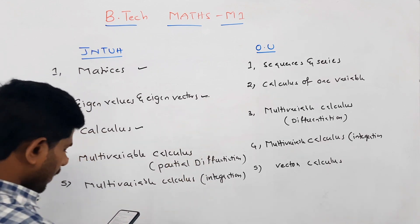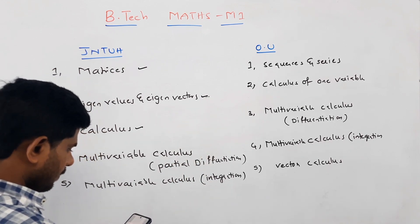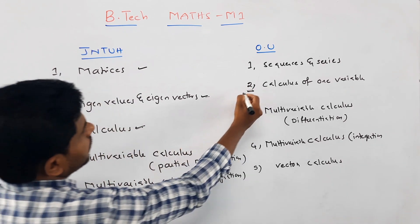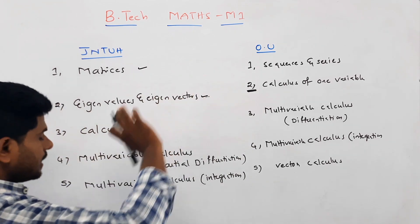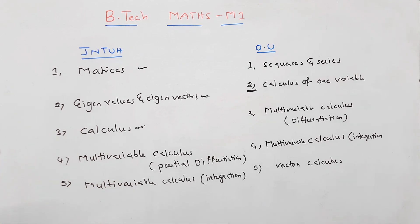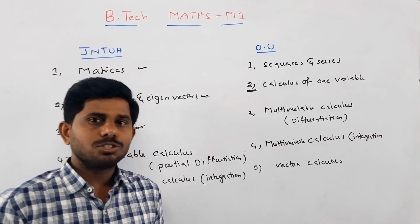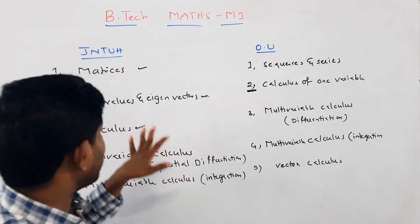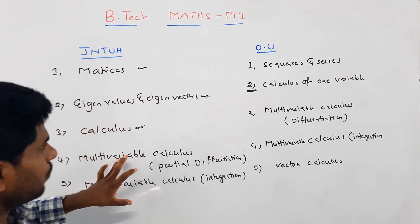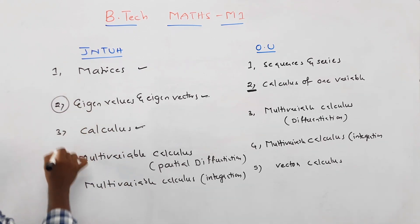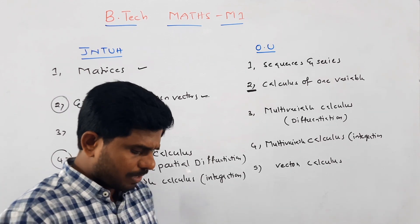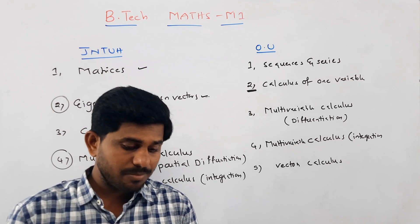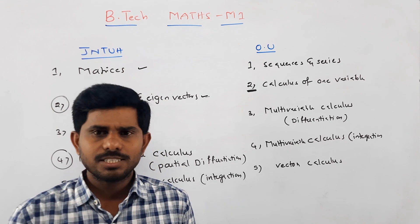Calculus topics include mean value theorem, Rolle's theorem, Lagrange's mean value theorem, geometrical interpretation, and Cauchy's mean value theorem. Then eigenvalues and eigenvectors. After that, calculus of one variable — single-variable calculus. Then multivariable calculus with partial differentiation, which you studied in intermediate first year. Partial differentiation is a very easy topic. Euler's theorem, total derivative, Jacobian, functional dependence/independence, maxima and minima of functions of two and three variables, and method of Lagrange multipliers — all easy topics.